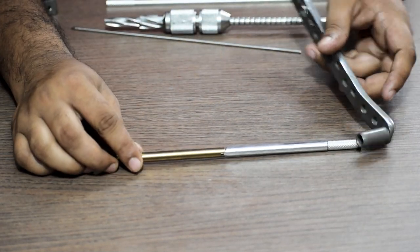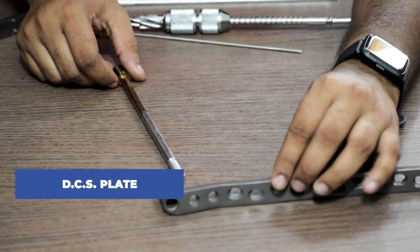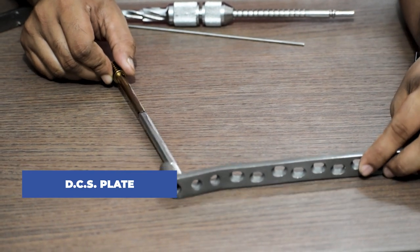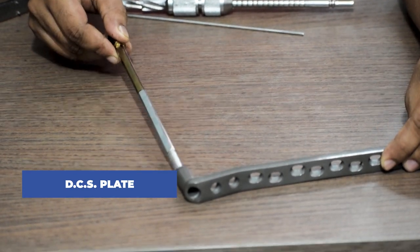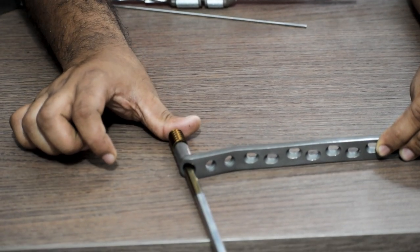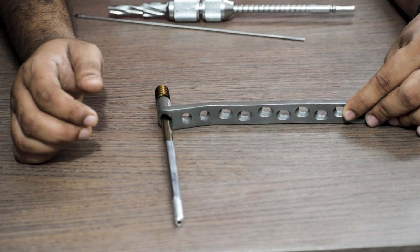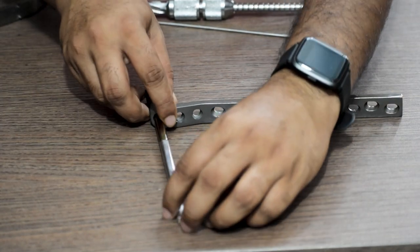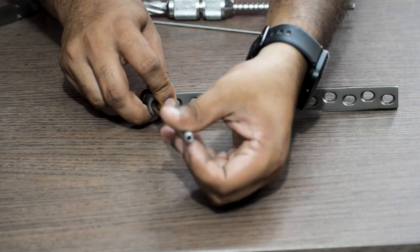After this we take the DCS plate and fix it. As you can see, the coupling screw will pass through this hole. After this we remove the coupling screw.